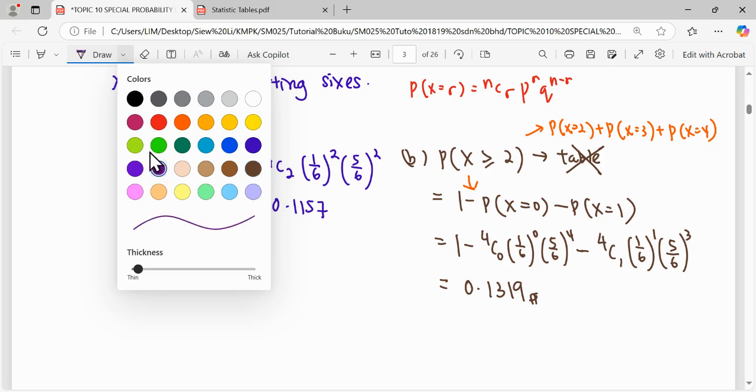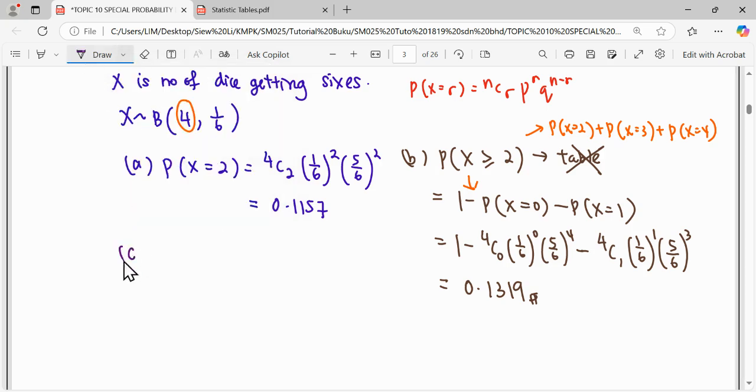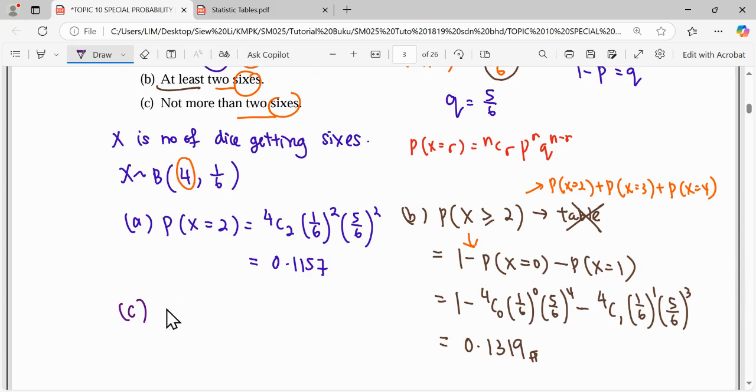Then continue for question c. Not more than two. Not more than means less than or equal to. So not more than two means the maximum you can reach is less than or equal to two.